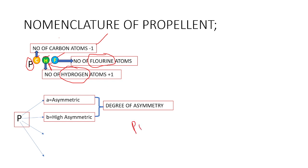In some cases, the propellant name is followed by the letter 'a', such as P12a. The letter 'a' indicates asymmetric in nature, meaning the number of fluorines are unequally distributed.